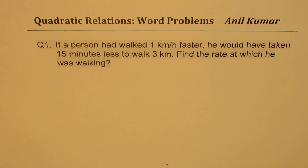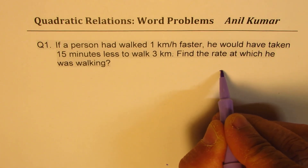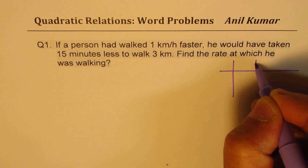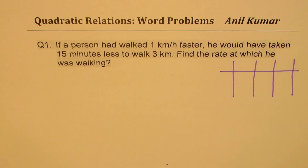Now let's solve question number one. As we solve the questions, we'll also try to understand the strategies involved — you can apply those strategies for any similar question. Question one: If a person had walked one kilometer per hour faster, he would have taken 15 minutes less to walk three kilometers. Find the rate at which he was walking. This is a distance, speed, time question — a very common question seen in any test paper.